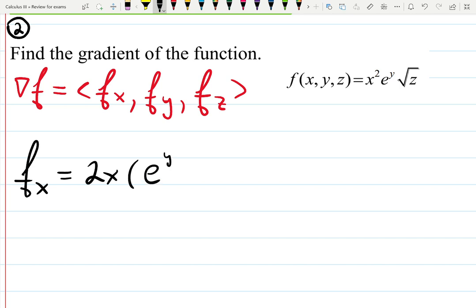And then e to the y times square root of z is just a constant when we're differentiating with respect to x. Derivative of y, derivative of the function with respect to y.